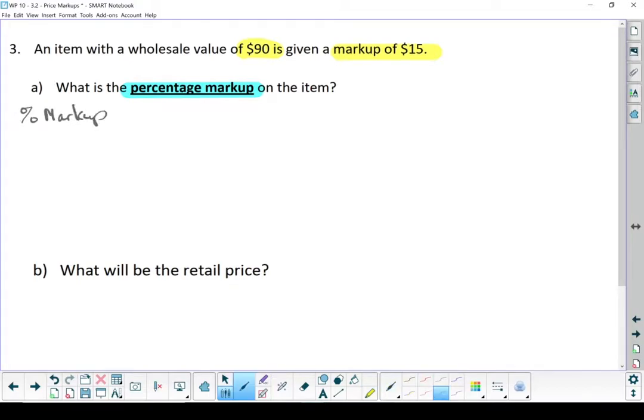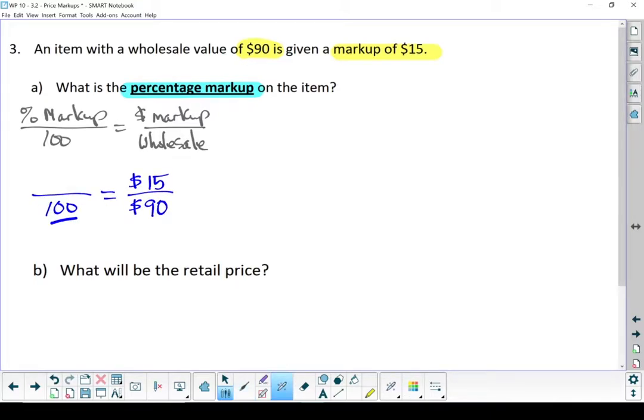Let's start with the formula. Let's put in what we know. So this is always going to be 100 on the bottom. My markup was $15, and my wholesale value was $90. What I don't know is the percent markup, so I'm going to put an X in there.